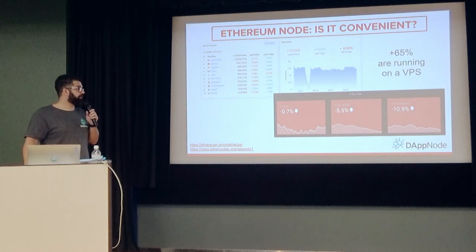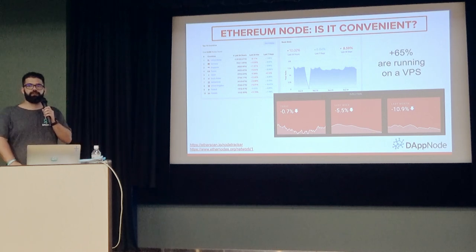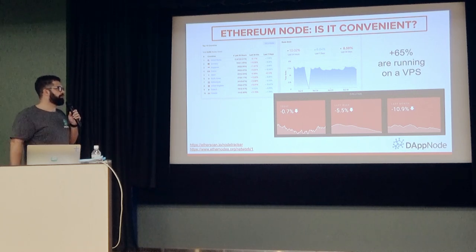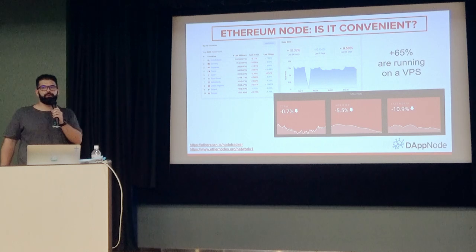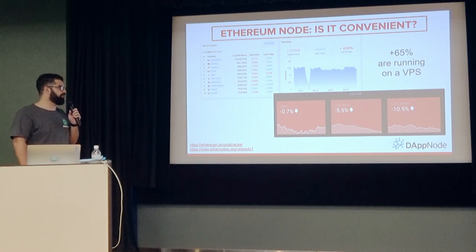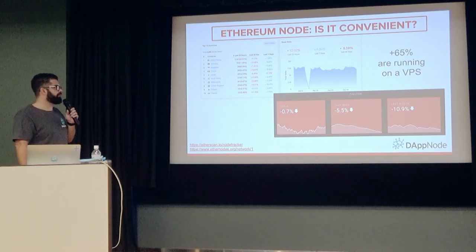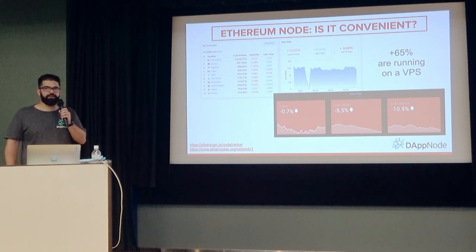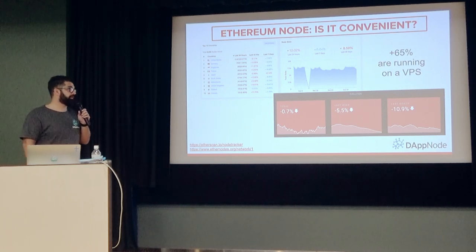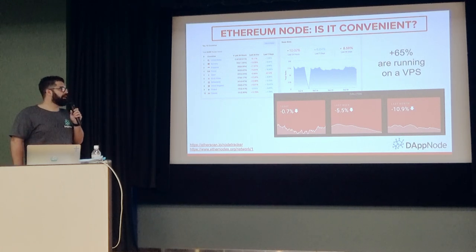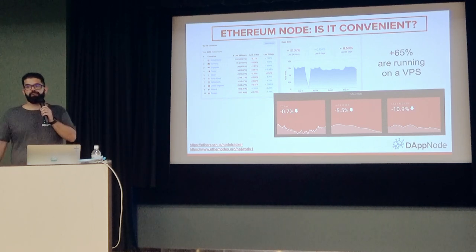One of the problems with this situation is that right now we are losing around 9% of the number of nodes every month. We believe it will be even worse when this Ethereum growth happens, because according to several scrapers around 65% of nodes are running on VPS. Since it's more expensive than running at home, we expect the number of nodes to decrease.